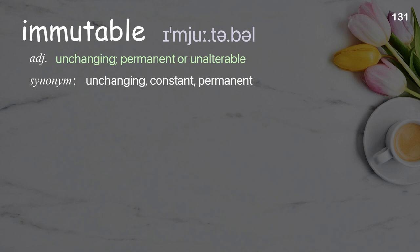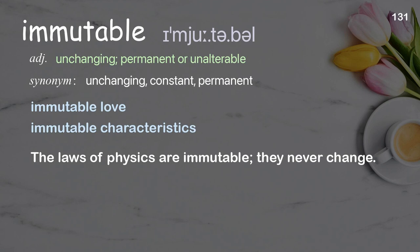Immutable: unchanging, permanent, or unalterable. Examples: immutable love; immutable characteristics. The laws of physics are immutable. They never change.